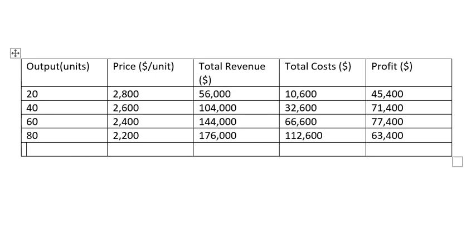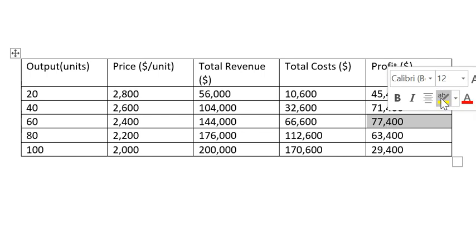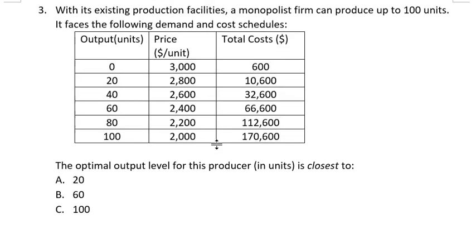When output is 100, price is 2,000, total revenue is 200,000, total cost is 170,600, and profit is 29,400. Therefore, the optimal output level is 60 units because it produces the highest profit. The answer is B.